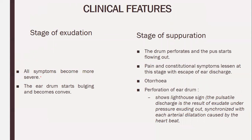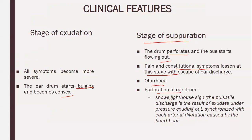In the exudation stage, all symptoms become more severe. The eardrum starts bulging and becomes convex due to pus accumulation. In the stage of suppuration, the membrane perforates and pus starts flowing, giving relief to the patient as pus escapes from the external ear. There is autorhea. The discharge shows a lighthouse sign — pulsatile discharge is the exudate coming out under pressure, synchronized with each arterial pulsation caused by the heartbeat.